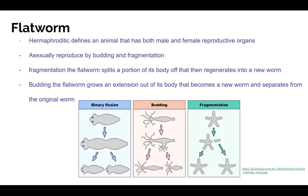The flatworm method of reproduction is vastly different than that of the jellyfish. Generally speaking, all flatworms are hermaphroditic. Hermaphroditic is used to define an animal that has both male and female reproductive organs. Flatworms perform both asexual and sexual reproduction, with the dominant mode varying between different species.